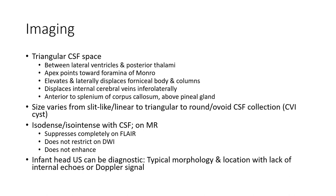Anatomically, CVI is a triangular CSF space between the lateral ventricle and the posterior thalamus, with a back point toward the foramen. It elevates the space or laterally displaces the fornix body and columns. The space contains the internal cerebral veins located laterally, is anterior to the splenium of the corpus callosum, and above the pineal gland. The shape can vary from a slim line, to linear, to triangular, to round or ovoid CSF collection.